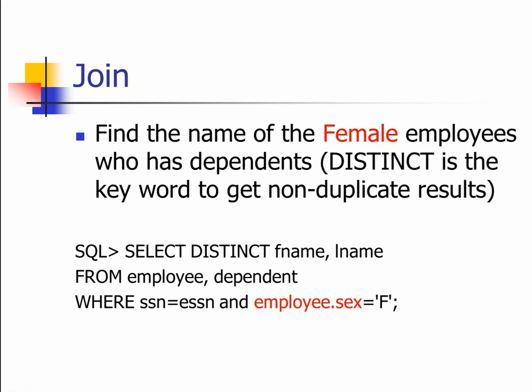Using the same concept, let's make things a little more complex. Instead of finding the name of employees who have dependents, now we want the name of female employees who have a dependent. This is actually pretty straightforward — we keep SELECT DISTINCT first name and last name FROM employee and dependent WHERE SSN equals ESSN, and now since we only want female employees, we add an additional condition using AND: employee.sex equals 'F' for female.